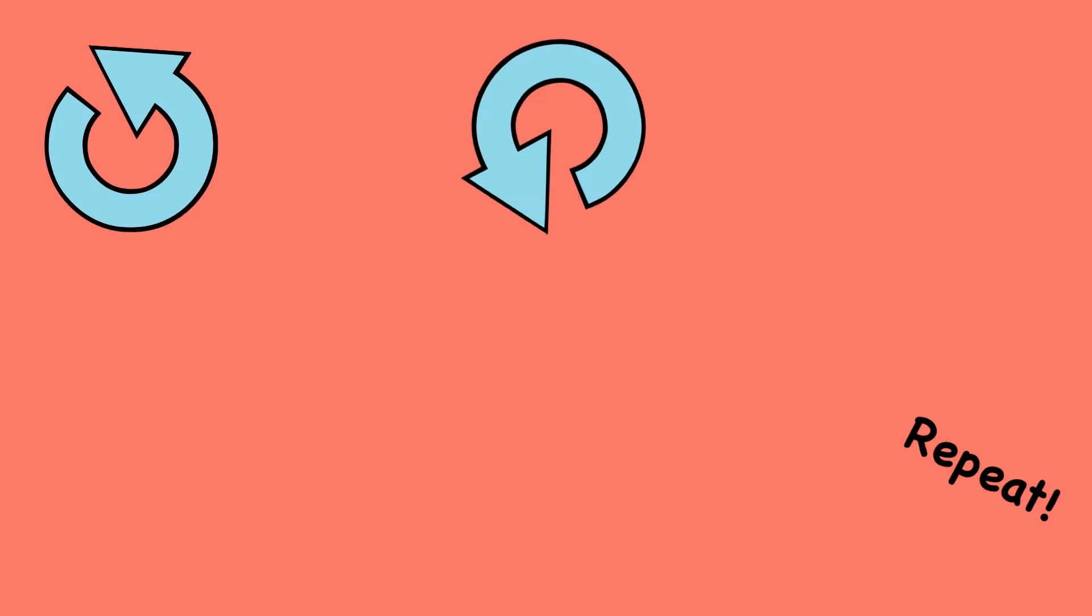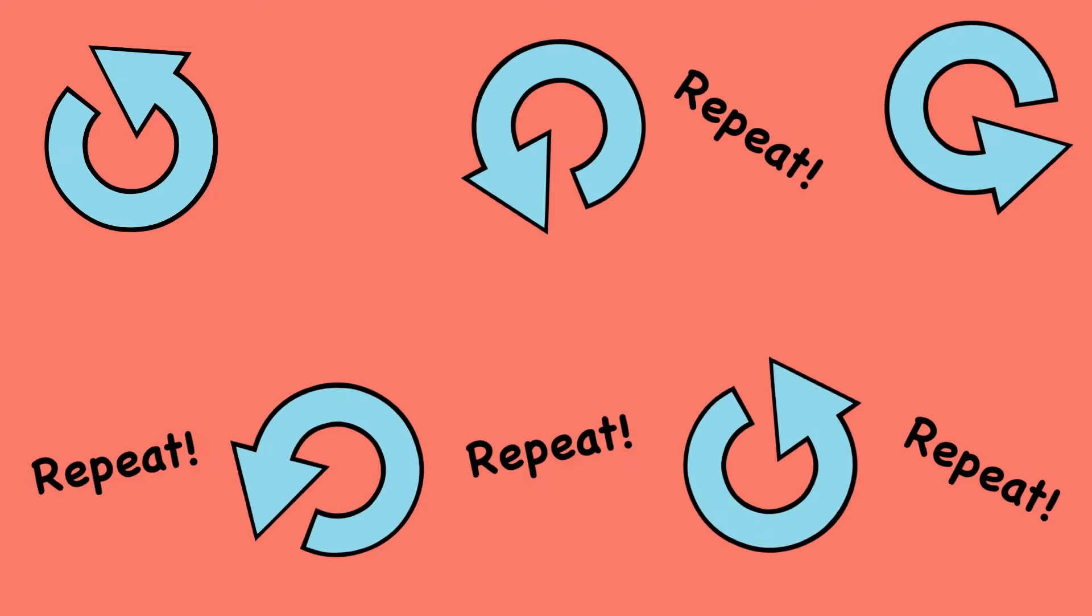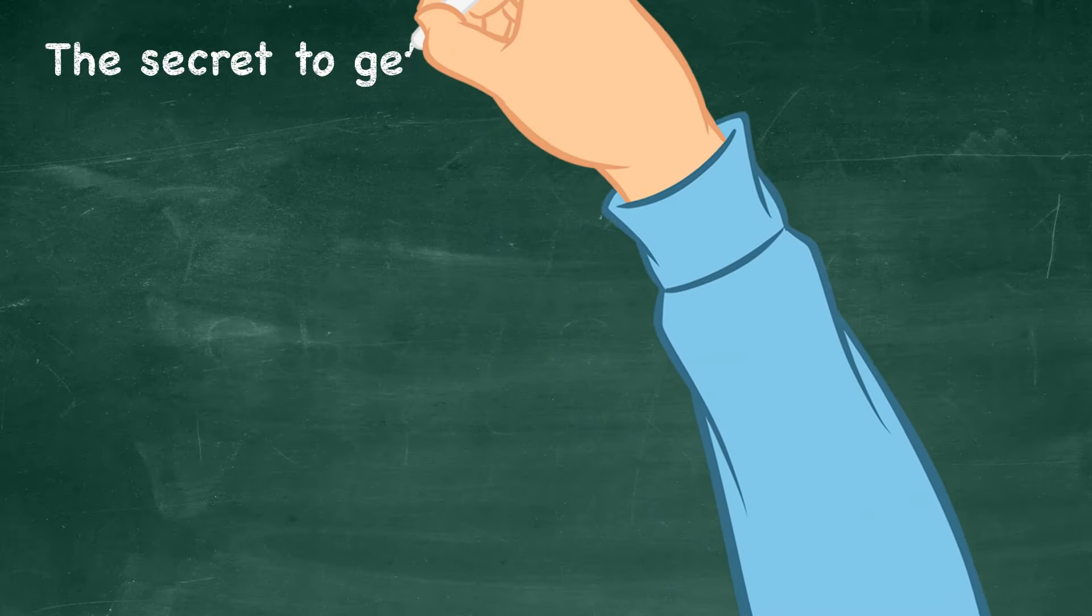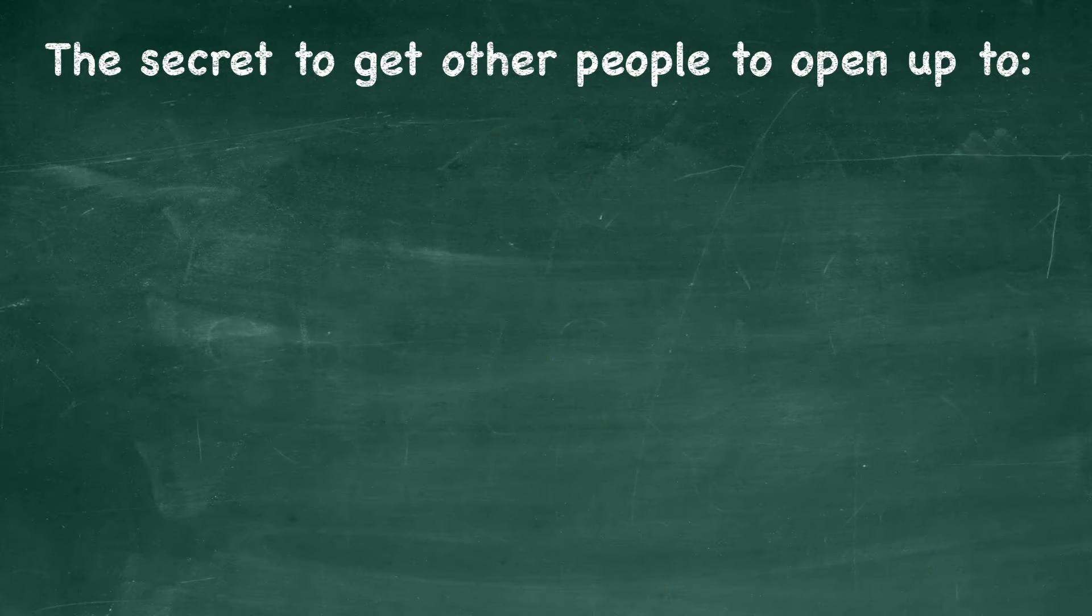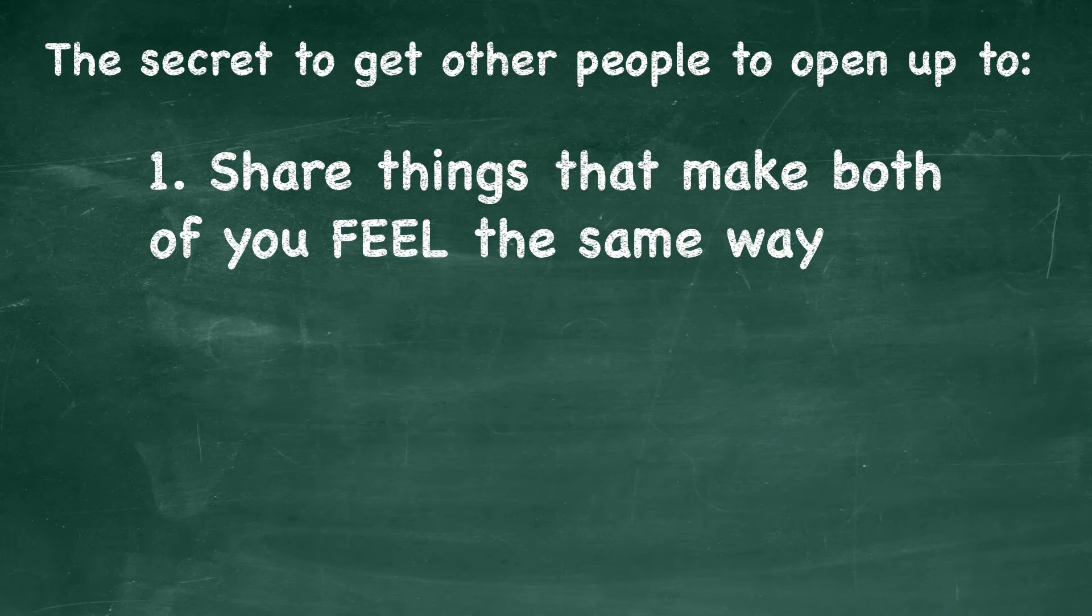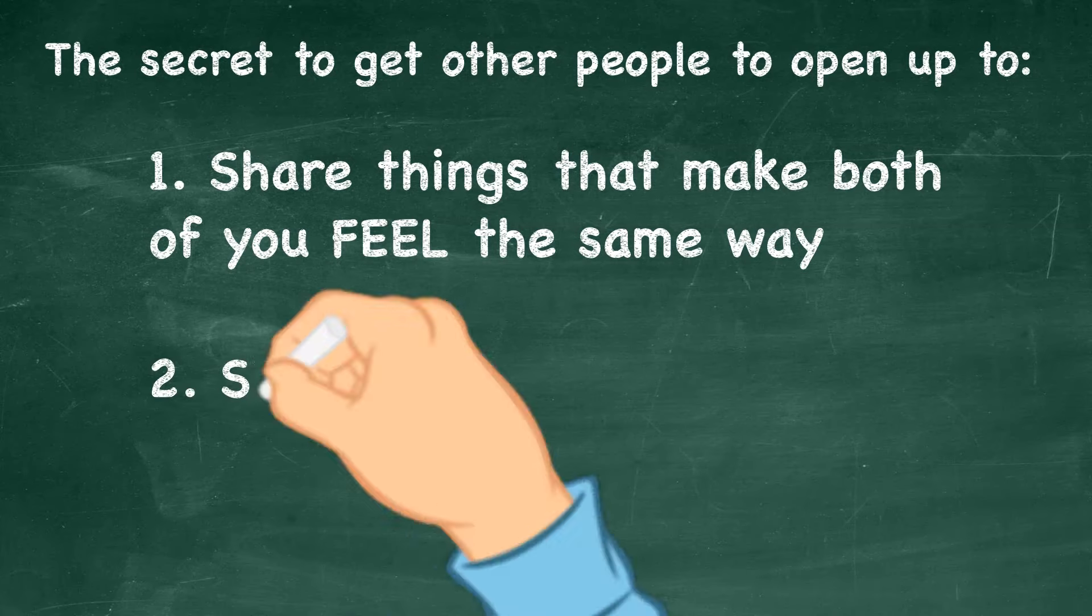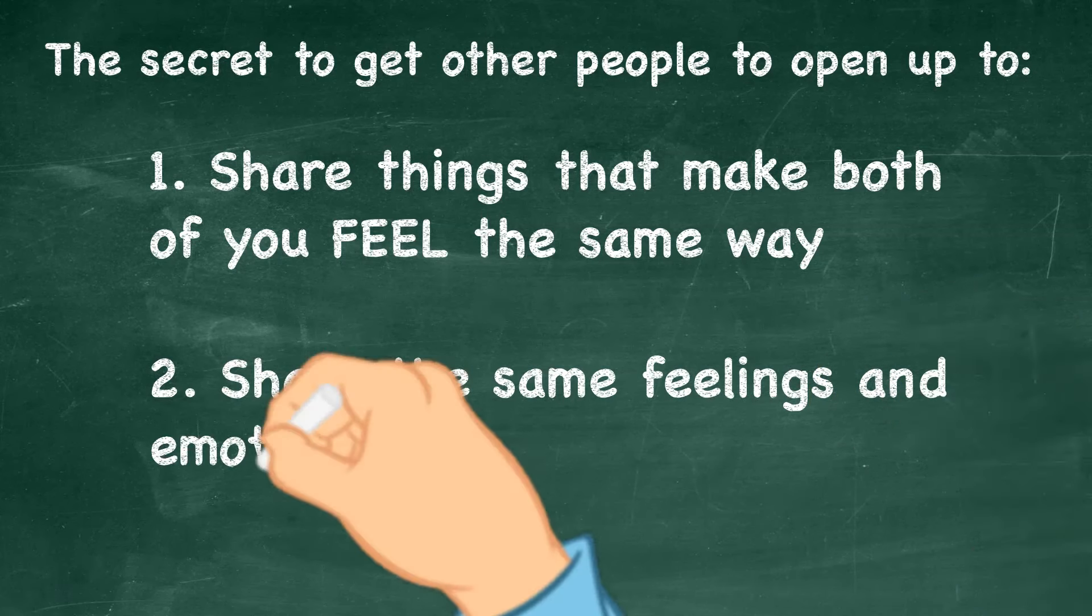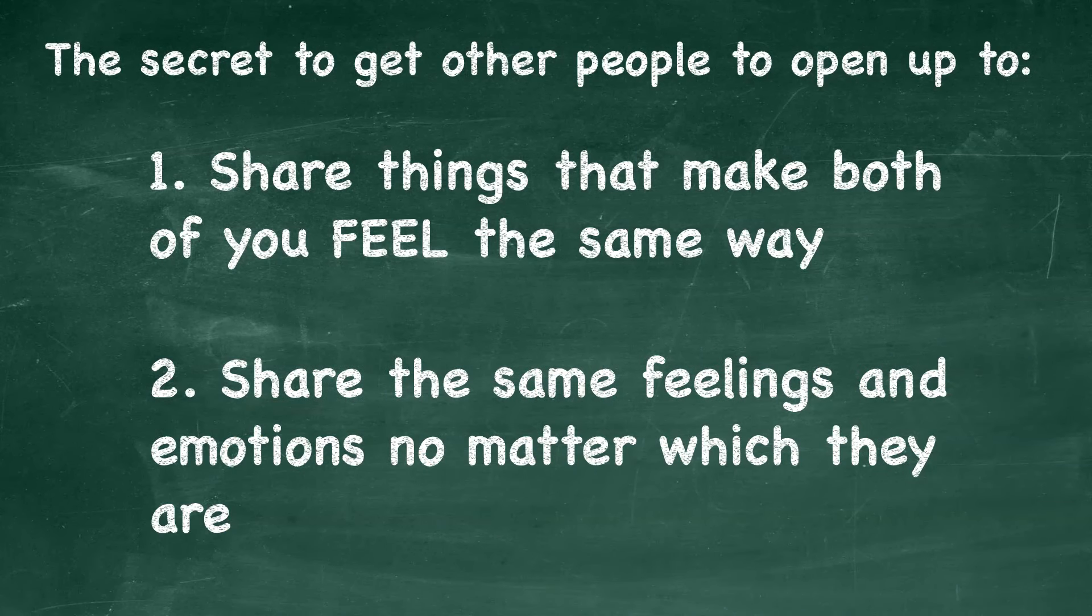From there, it's up to you to keep repeating these same steps for the conversation to go deeper and deeper so the other person opens up more to you. The secret to get other people to open up to you is to share things that make both of you feel the same way. It doesn't matter if both of you feel shame, anxiety or happiness. The key is to share the same feelings and emotions no matter which they are.